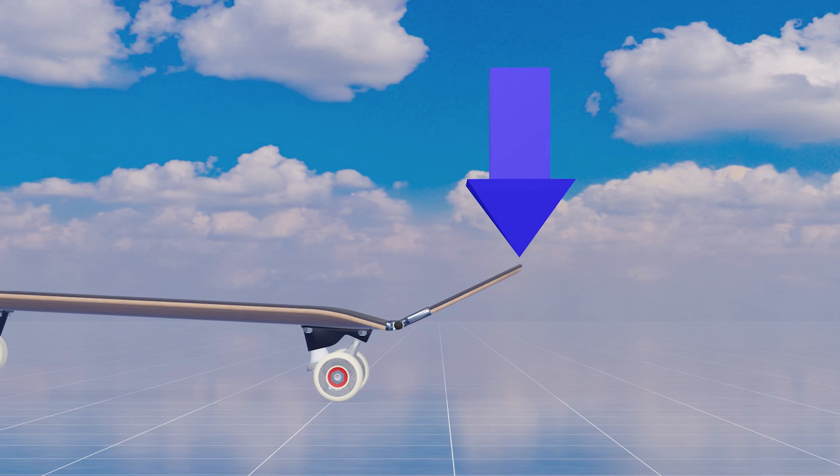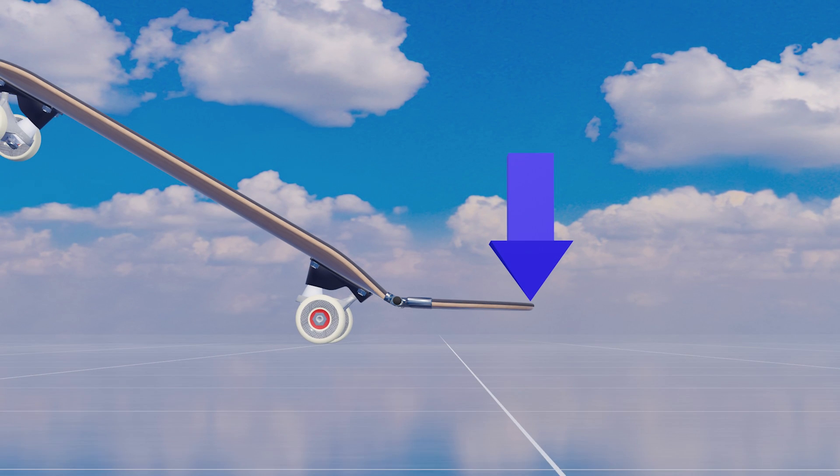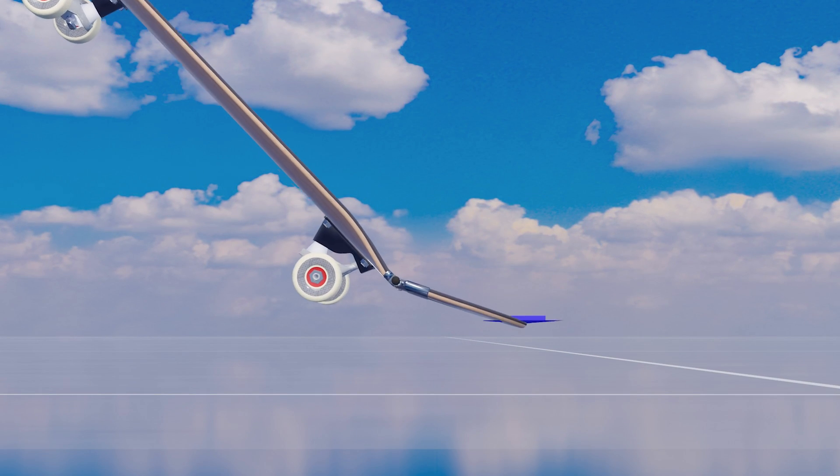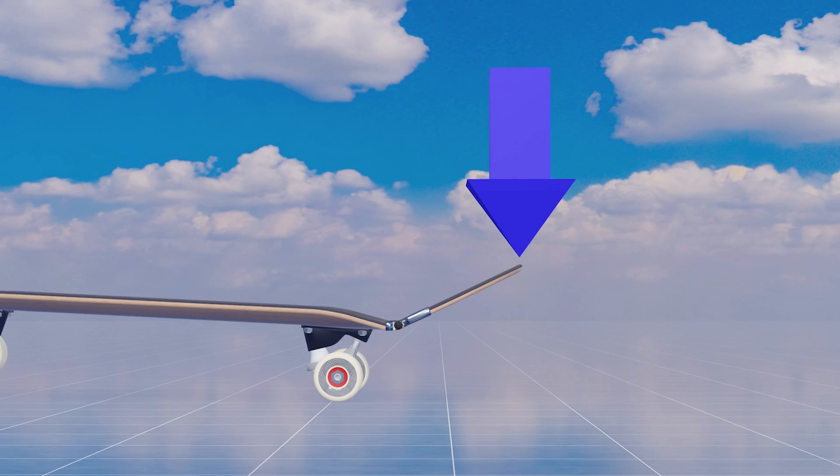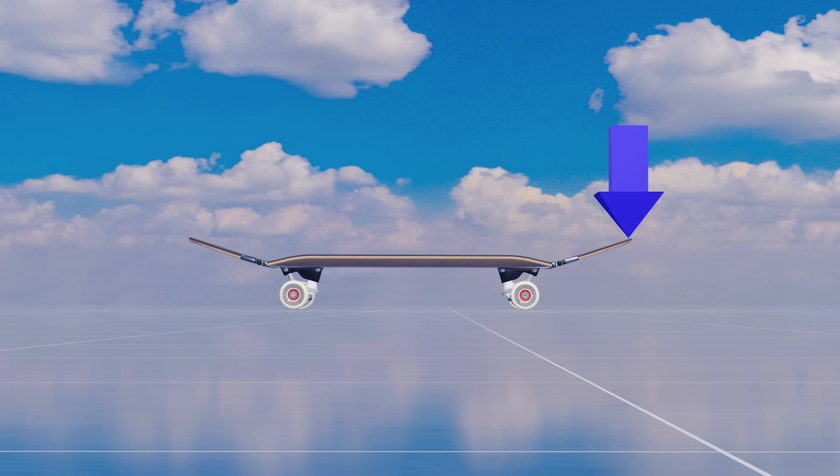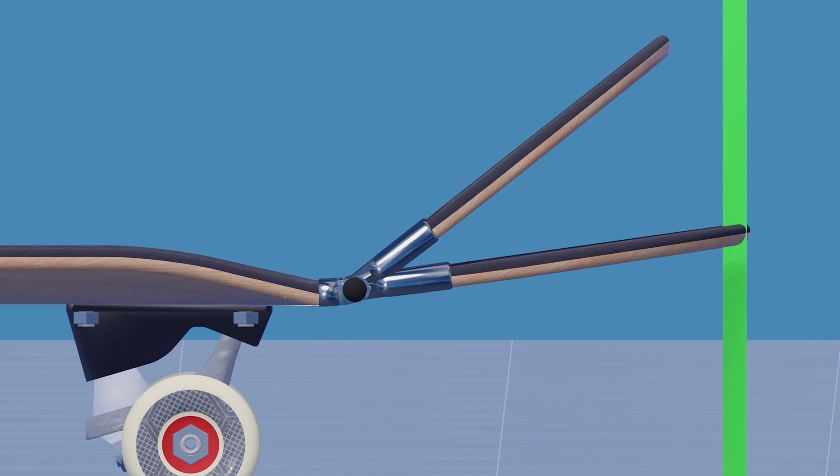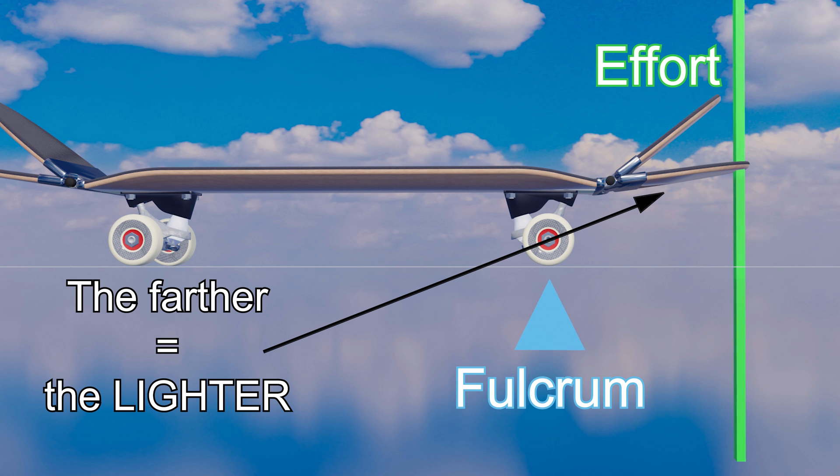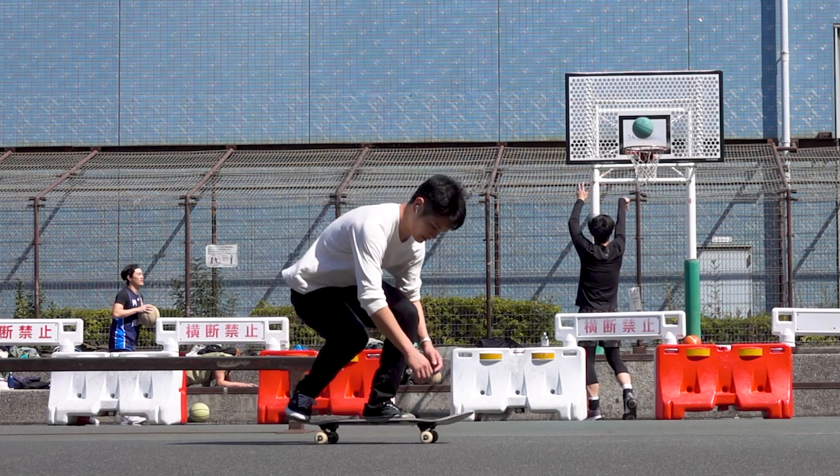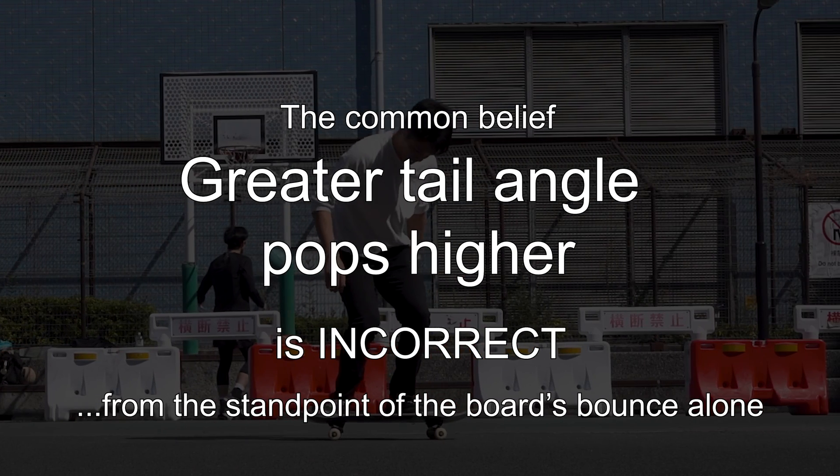On the other hand, with a 36-degree board, the tail will hit the ground only after descending a long distance, at which point the board has already lost some of its energy. If you look at the horizontal distance, you can see that the leverage principle applies. The looser the angle, the greater the distance from the fulcrum to the point of force. Thus, it can lift the nose on the opposite side of the force more effectively. Given these facts, the common saying that the greater tail angle pops higher is not necessarily correct from the standard point of the board's bounds alone.